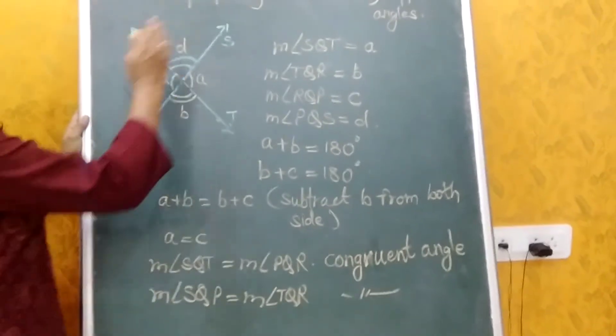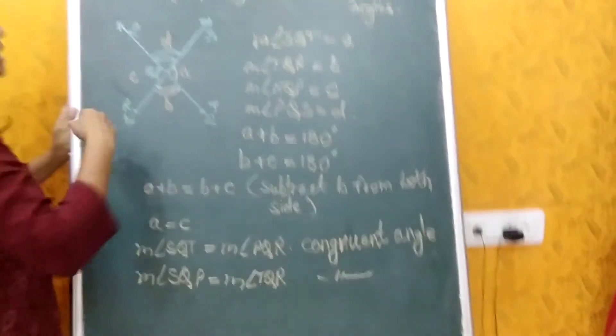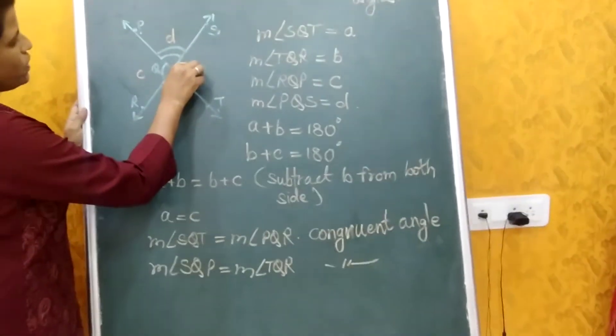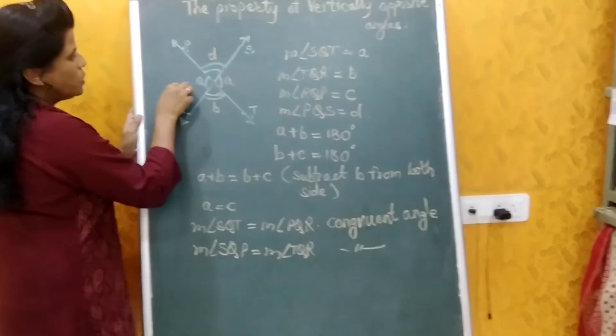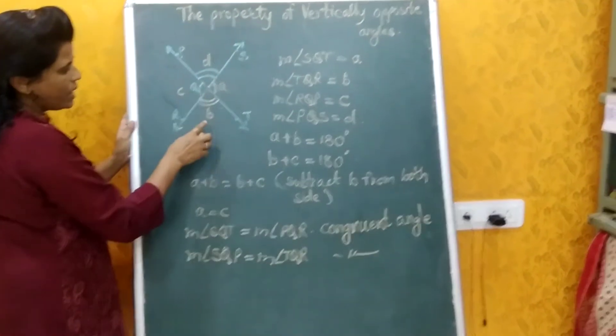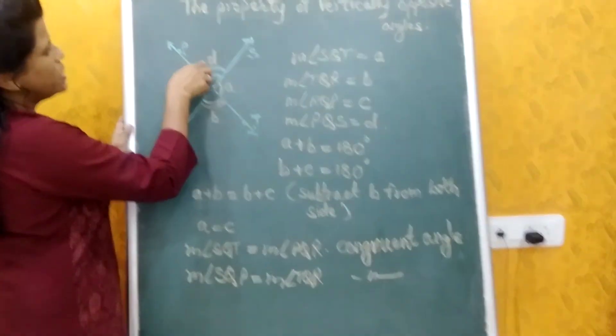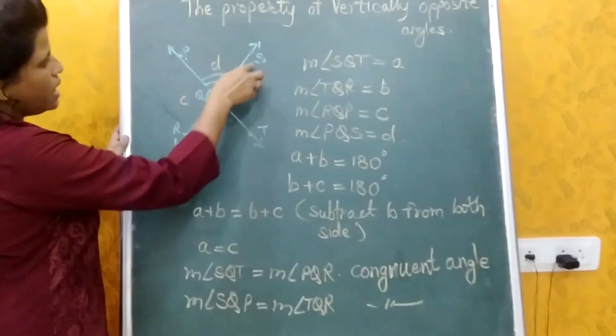So the property for vertically opposite angles is: the measure of angle A is equal to C, and the measure of angle B is equal to D.